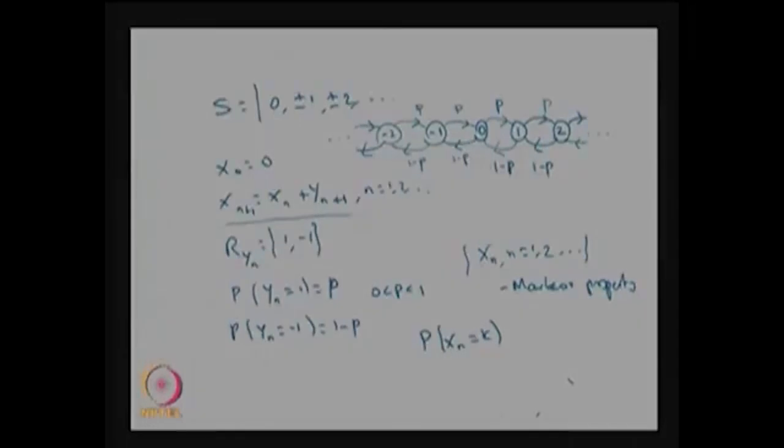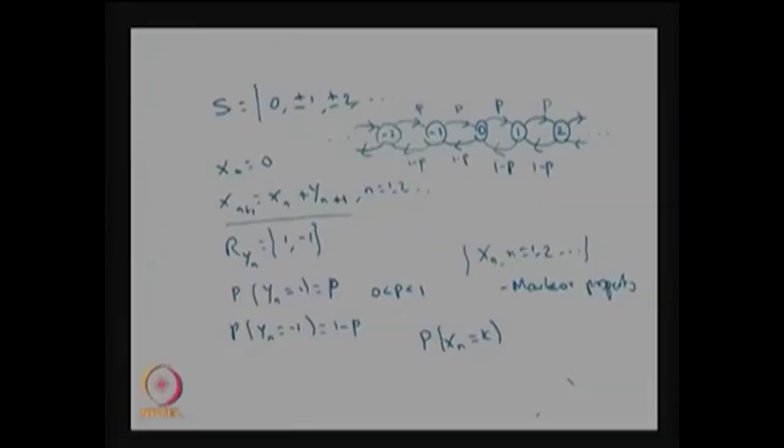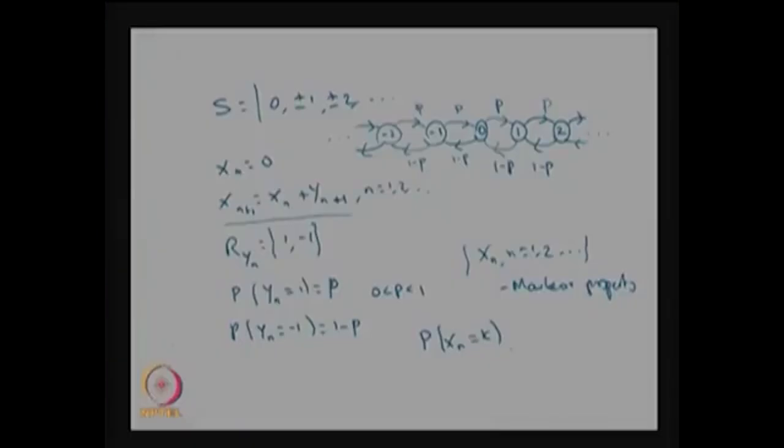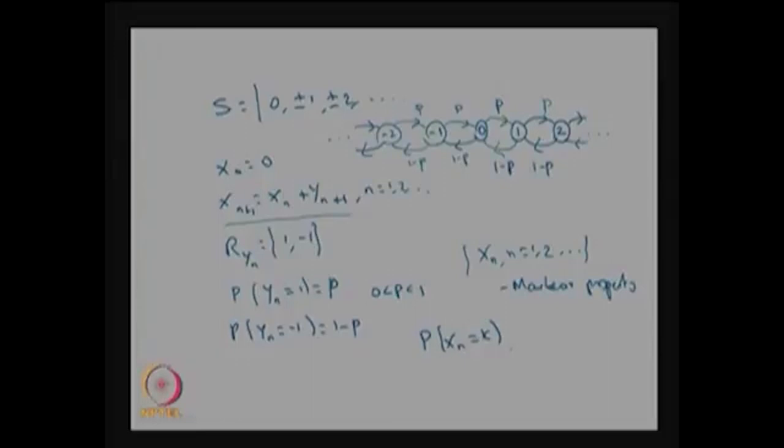This is left as an exercise with the final answer provided. The key difference from the earlier example is that the state space here is countably infinite, so p is not a simple finite matrix, making computation of p squared and p^n more complicated. In conclusion, knowing the initial probability vector and the one step transition probability matrix allows us to obtain the distribution of xn for any n.